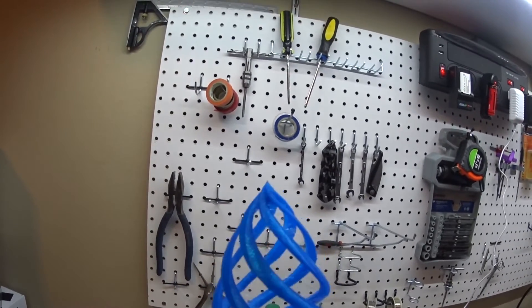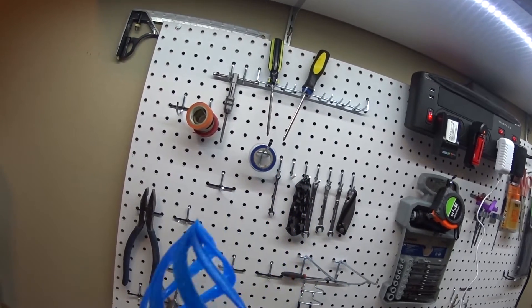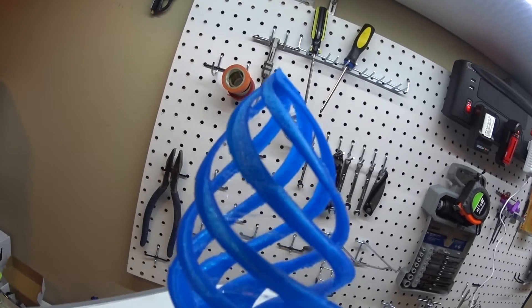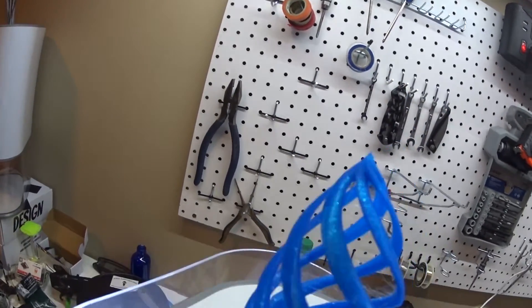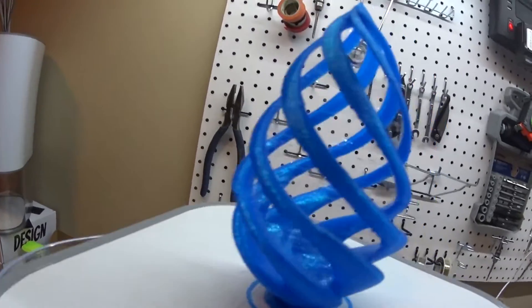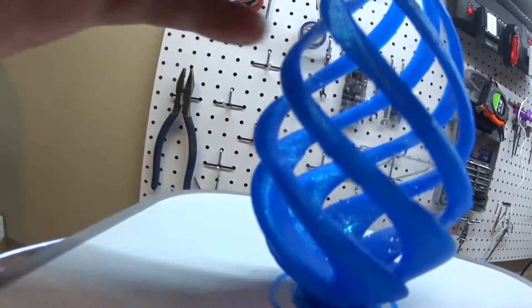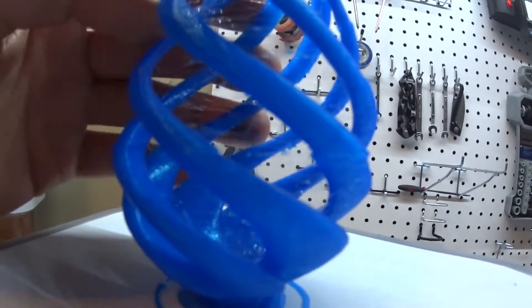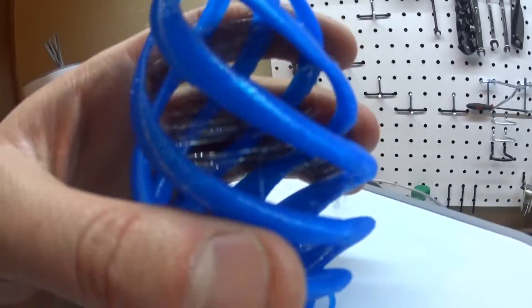Hey guys, quick update. I just printed this Christmas ornament on the Tico, and for the most part it came out good, except you can see I'm still having a layer shifting issue right here and right here. But other than that, it looks pretty good.